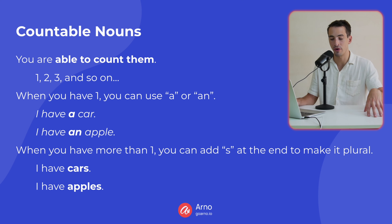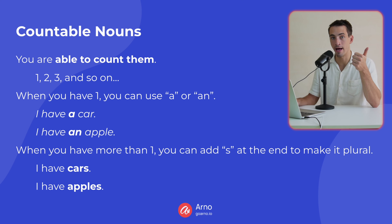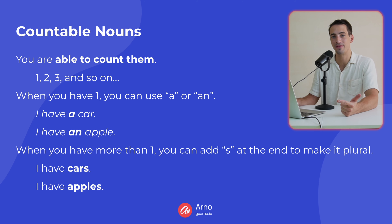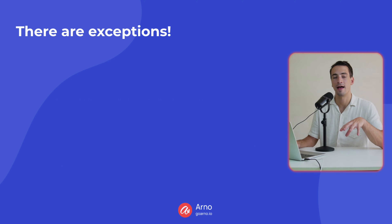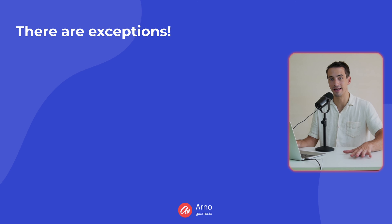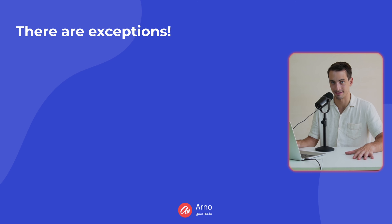When you have more than one of a countable noun, you can add S at the end to make it plural. 'I have cars' or 'I have two cars.' 'I have apples' or 'I have two apples.' With countable nouns, you can add 'a' or 'an,' and you can add S at the end to make it plural. However, in English, there are many exceptions — countable nouns that you cannot make plural simply by adding S.